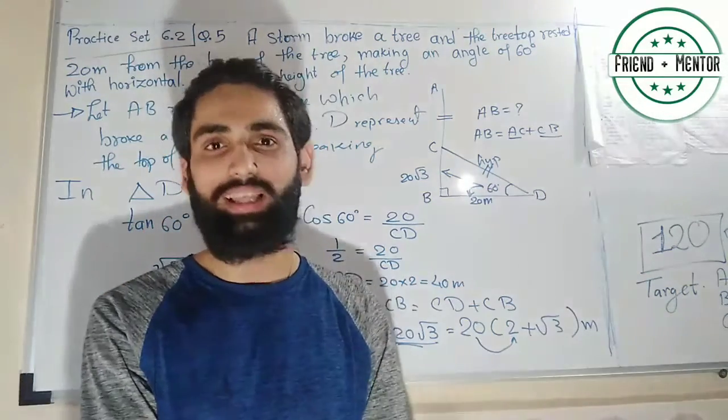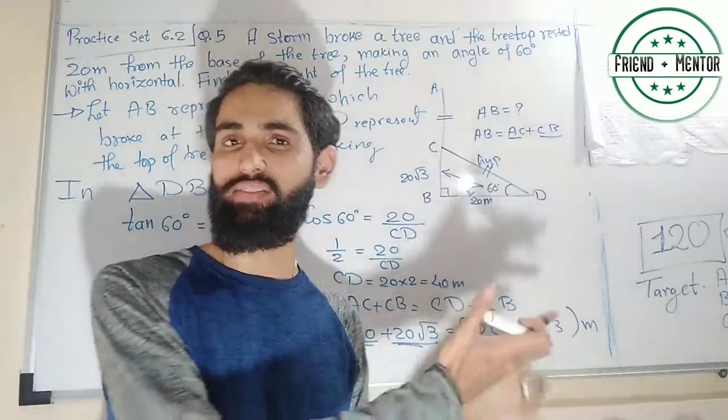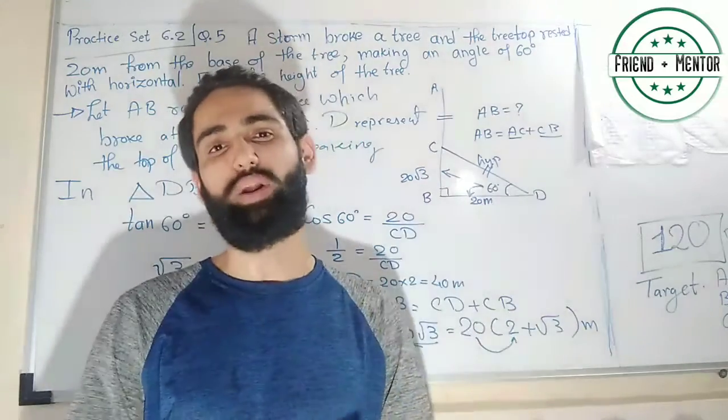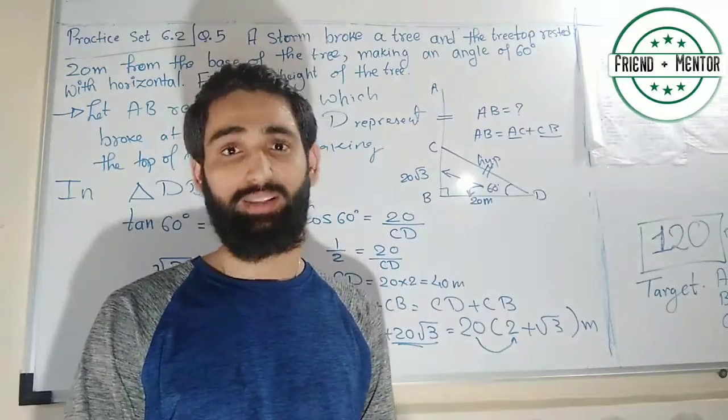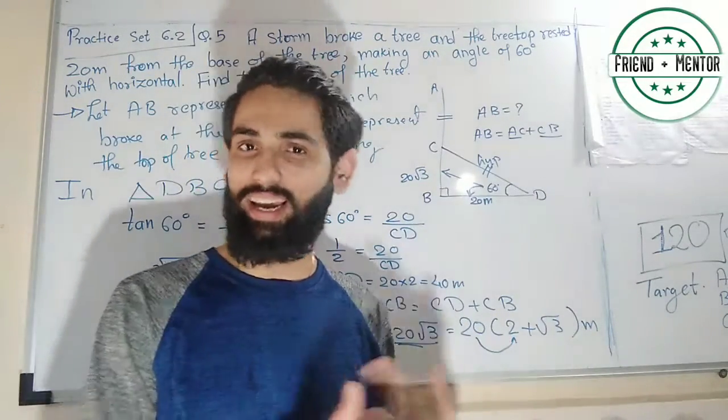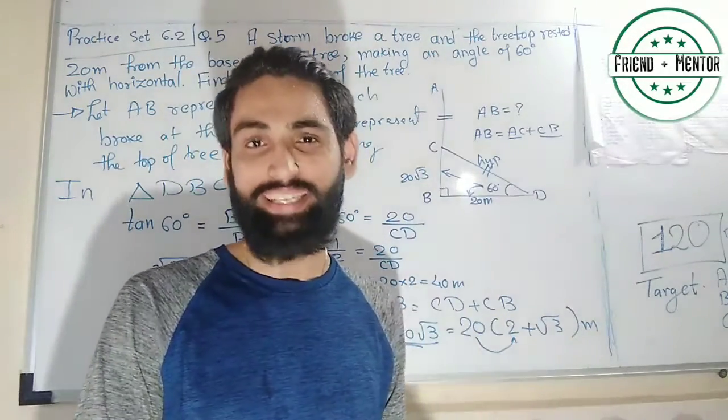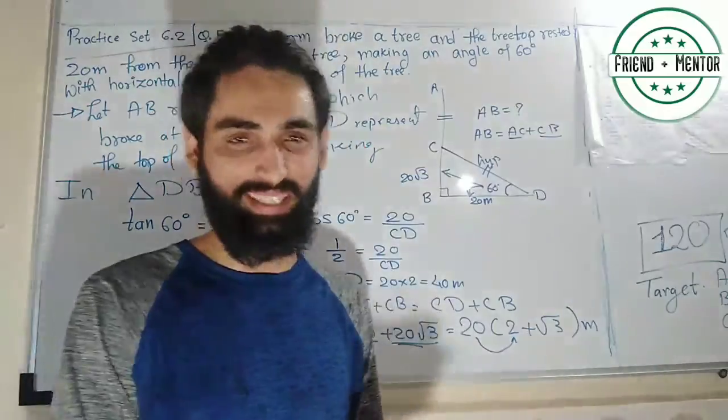If a value for √3 had been given, we would substitute it; since it was not given, we leave the answer as 20(2 + √3). That completes question 5. Now let us look at question number 6.